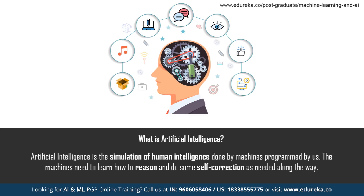AI is the simulation of human intelligence done by machines programmed by us. The machines need to learn how to reason and do some self-correction as needed along the way. Artificial intelligence is accomplished by studying how the human brain thinks, learns, and decides while trying to solve a problem, and then using the outcomes of this study as a basis for developing intelligent software and systems.